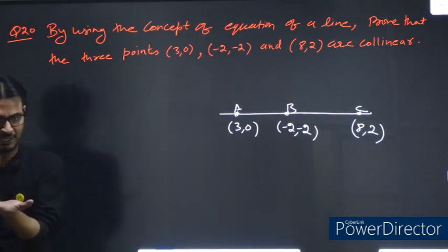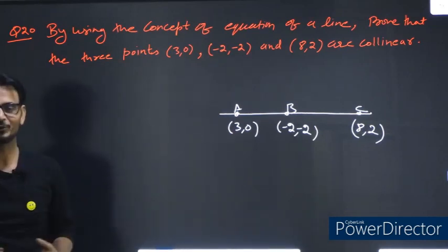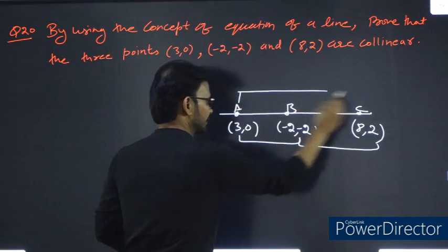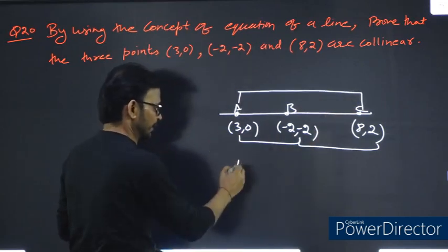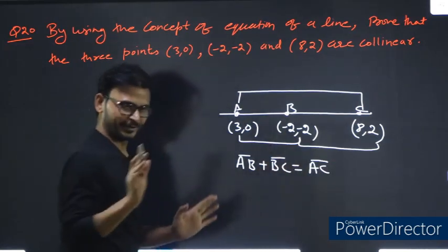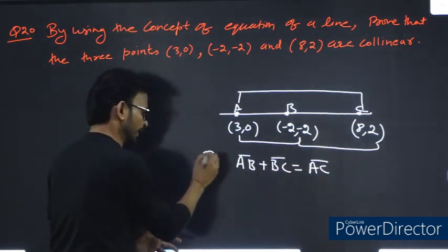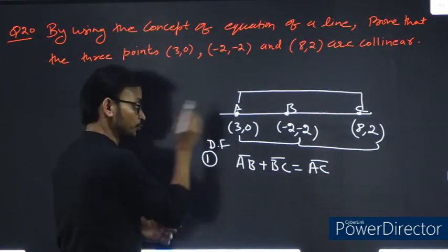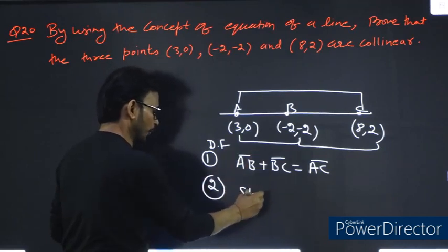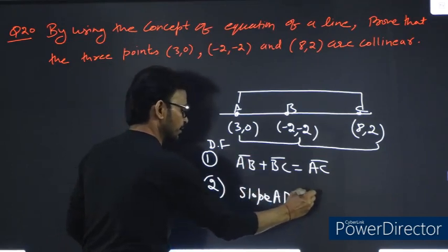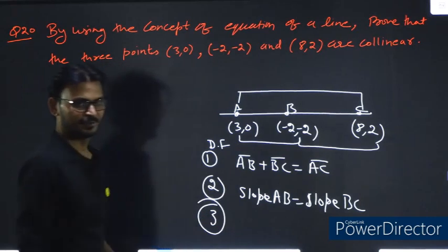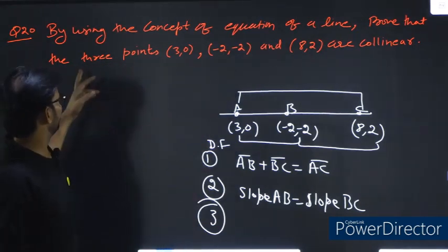How do you show these points are collinear? You can prove it using distance formula - find AB distance plus BC distance. If they equal AC distance, the three points are collinear. First is the distance formula, and then we can do the slope. You can do the slope of AB.